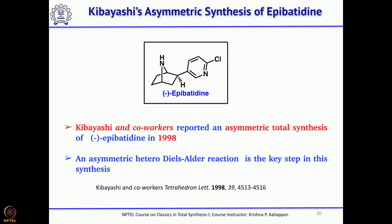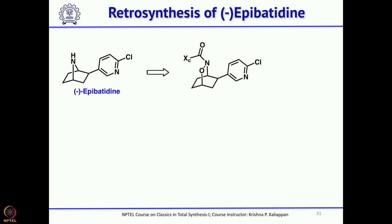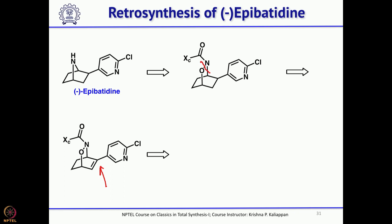The second asymmetric total synthesis was reported by Kibayashi's group in 1998. What he used was an asymmetric hetero Diels-Alder reaction as the key reaction to construct a bicyclo[2.2.2] system, from which minus-epibatidine could be made. His retrosynthesis was: if you have this bicyclo[2.2.2] system, one can selectively cleave the N-O bond; converting the resulting OH into a good leaving group followed by an intramolecular SN2 reaction gives epibatidine. This can be obtained by reduction of a double bond in a cyclohexene.